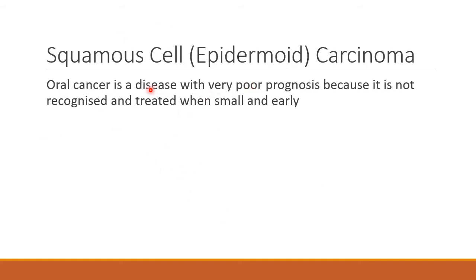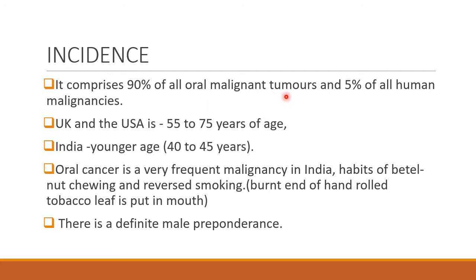Oral squamous cell carcinoma is a disease with very poor prognosis because it is not recognized and treated when small and early. It comprises 90% of all oral malignant tumors and 5% of all human malignancies. In the UK and USA, the age group affected is 55 to 75 years, but in India the younger age group of 40 to 45 years is affected, because oral cancer is very frequent in India due to habits of betel nut chewing and reverse smoking — where the burnt end of the tobacco leaf is placed in the mouth. There is a definite male preponderance.